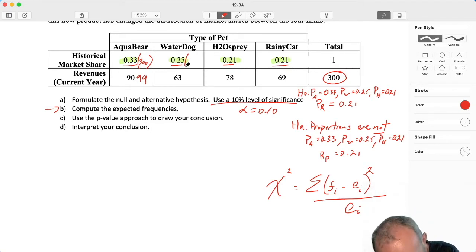For Water Dog, if the null hypothesis holds, well they would get a quarter of that, and so that would be $75. For Osprey, H2 Osprey, they would get 21% of that. So that expected value is $63. And same for Rainy Cat. They would also have $63. So from there, it's the same calculation.